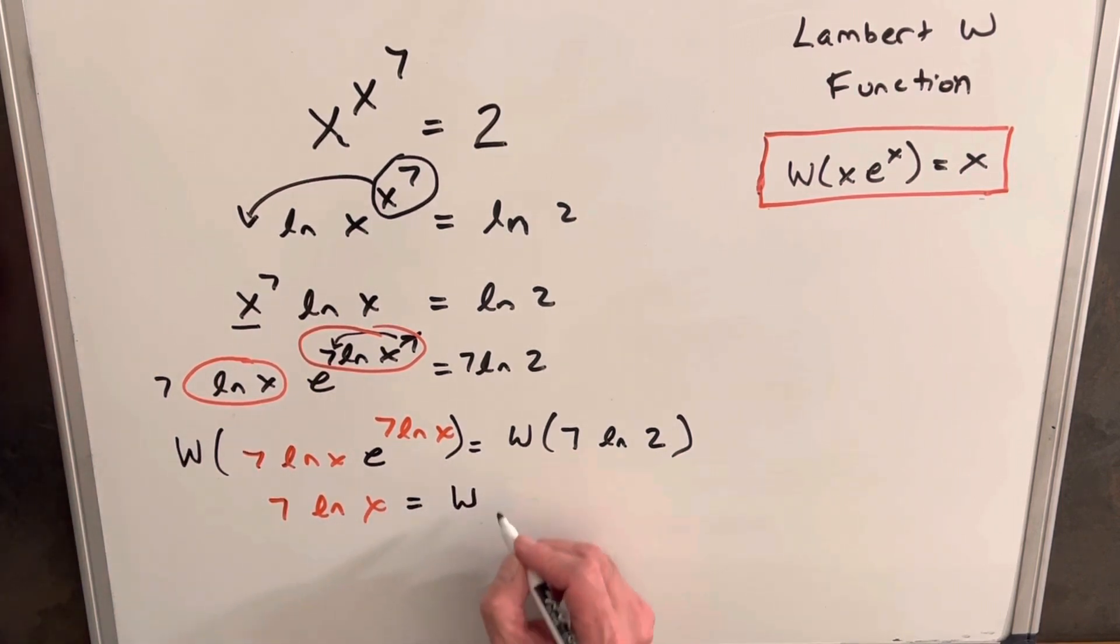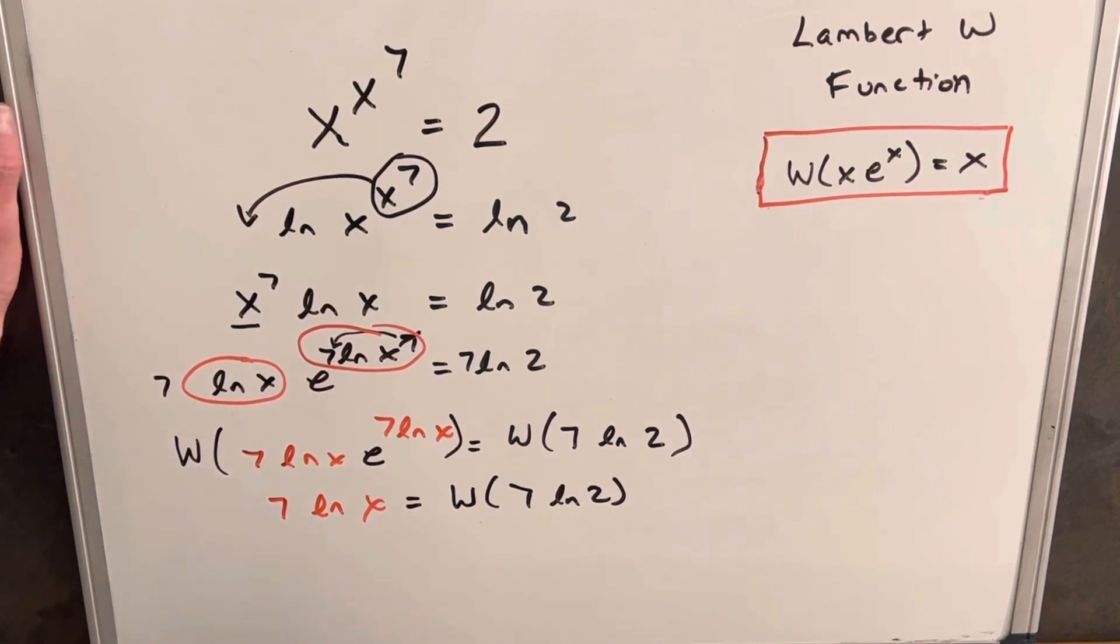7 ln x is going to equal Lambert W of 7 ln 2. We just want to solve for x, so we'll divide by 7 on both sides. That'll cancel.